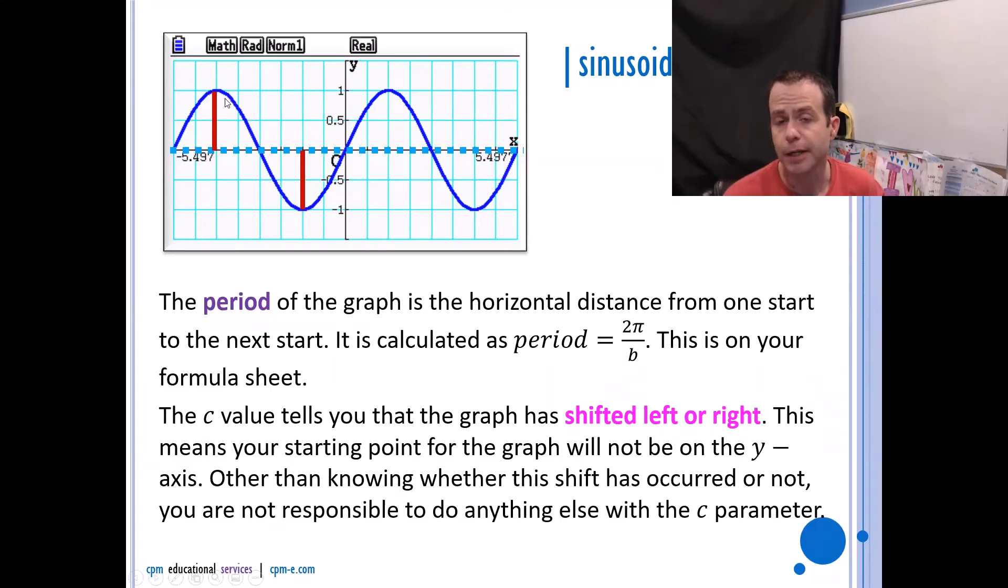I could also find the period by going from max to max or from min to min. So that purple line that I've just drawn in there would represent the horizontal distance of one period. A period is calculated as 2π/b, and algebraically that also means b equals 2π over your period. Period equals 2π/b is on your formula sheet as well, so that is something you have access to.